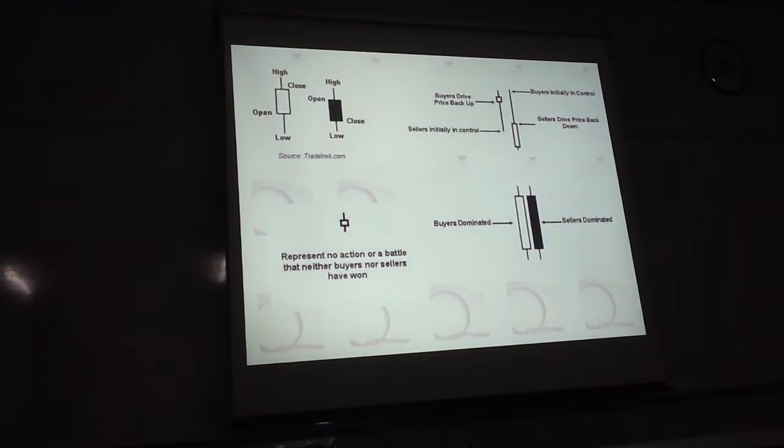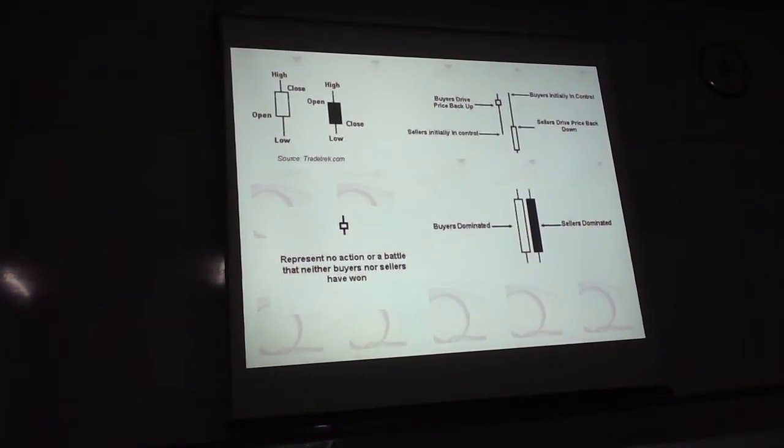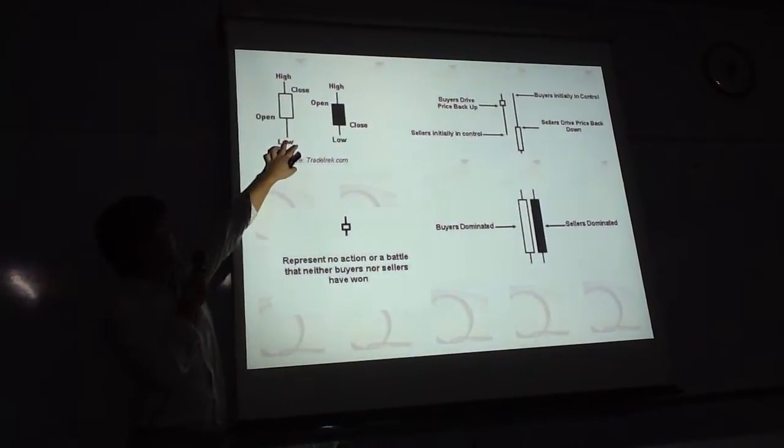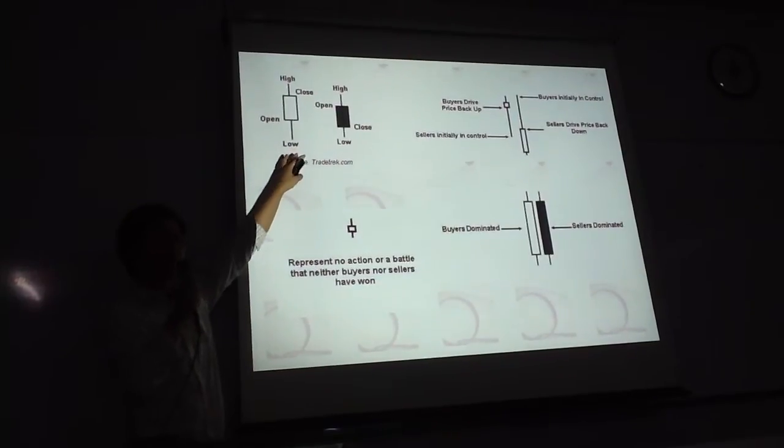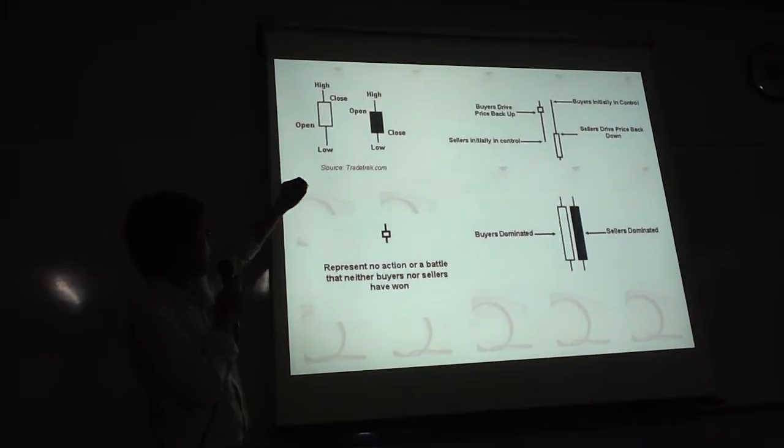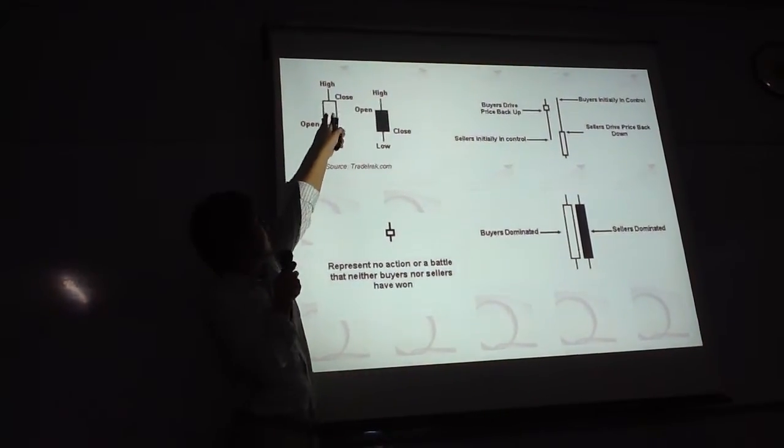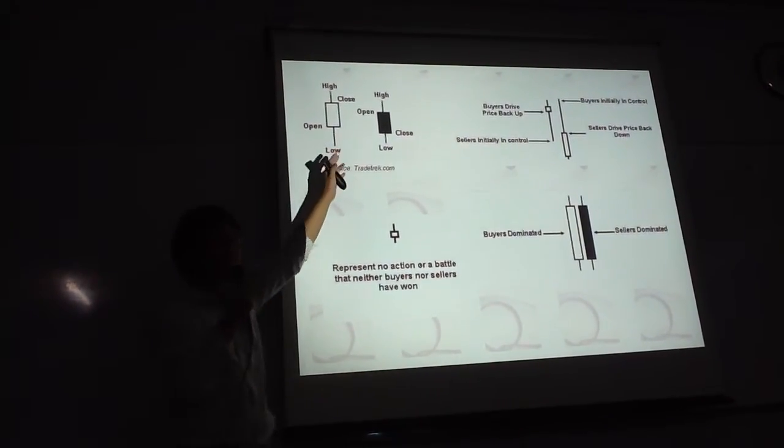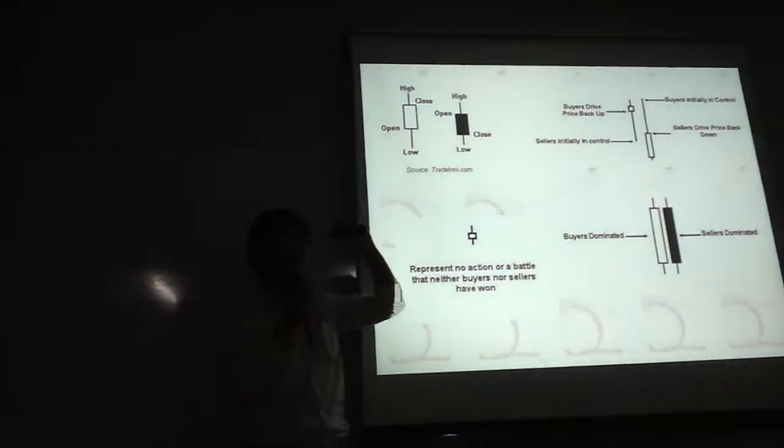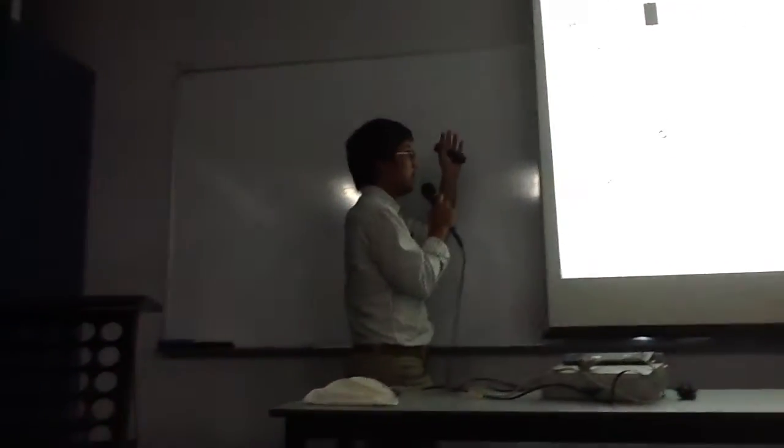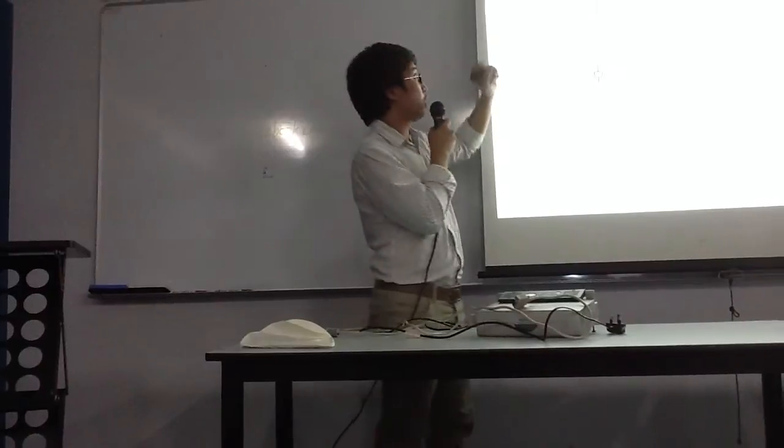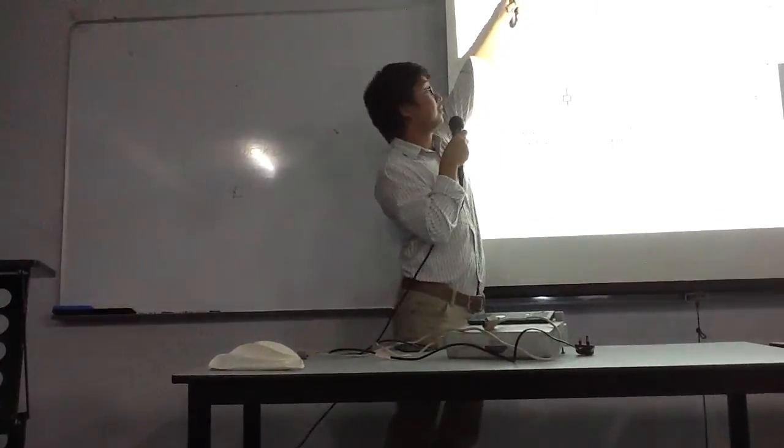For example, in this candlestick, the lower stick indicates the lowest point na binaba yung presyo. The highest yung highest, where it closed. When the body is green... Why? Who's using citizen online? Majority. Okay. When the body is green, it means it went up, it closed at the higher end of the stick.